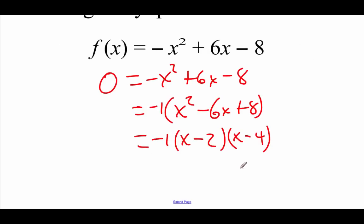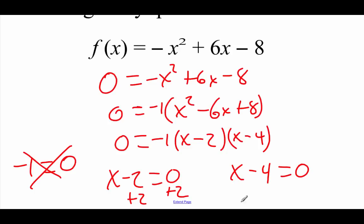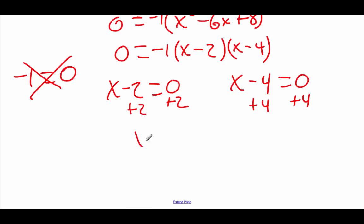Now we're going to take each one of our factors and set it equal to zero, since we've still got this zero on the left-hand side. If we grab that first factor — technically it's the negative 1 — so negative 1 equals 0 doesn't make any sense, so I'm just going to ignore that. I grab the x minus 2, set that equal to 0, and also x minus 4, set that equal to 0. In both cases we add that number to the other side: add 2, add 4, and we get x equals 2 and x equals 4.